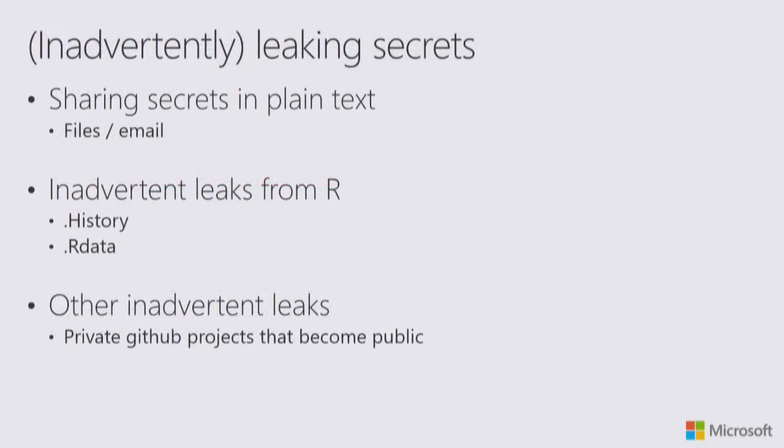How can you inadvertently or otherwise leak your secrets? A typical thing I've seen frequently is that people send their credentials in an email or put them directly in the script file. Some more inadvertent ways: if you use your secrets in your R session interactively, that session may be stored in your .Rhistory file or your .Rdata file if you don't disable history and saving data automatically. Another inadvertent way is to store your credentials initially in a private GitHub repo, and then one day you decide to publish that repo — and your secrets are in the history.